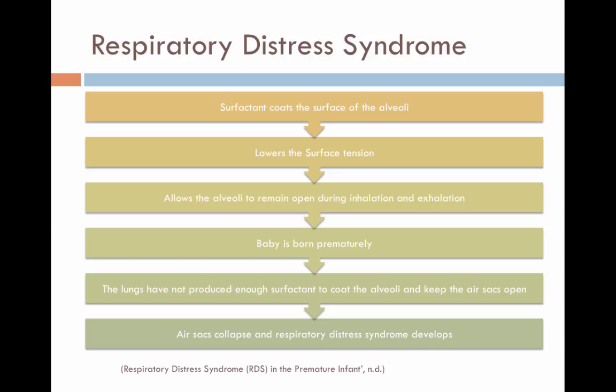For newborns to be able to breathe easily, the alveoli must be opened and filled with air. Surfactant coats the surface of the air sacs, where it lowers the surface tension and allows the air sacs to remain open throughout the respiratory cycle.